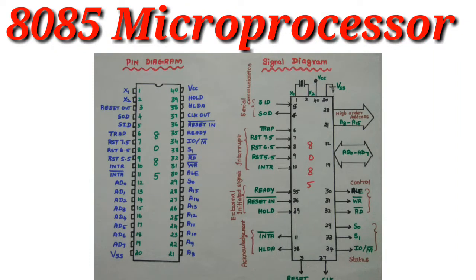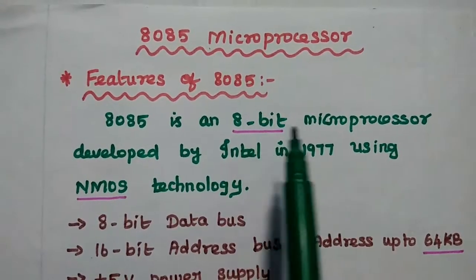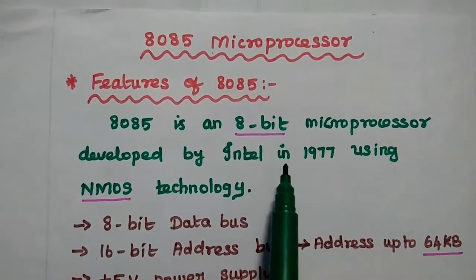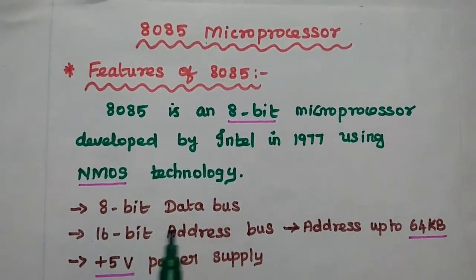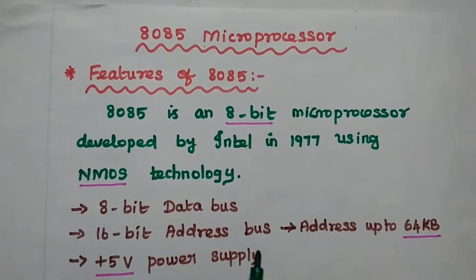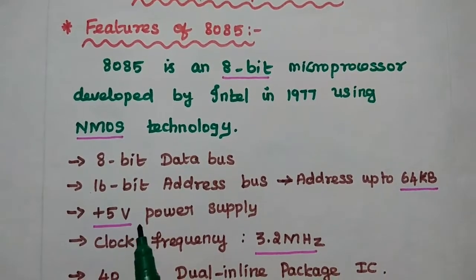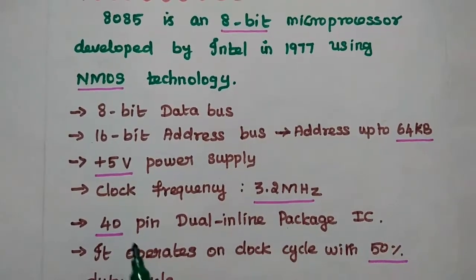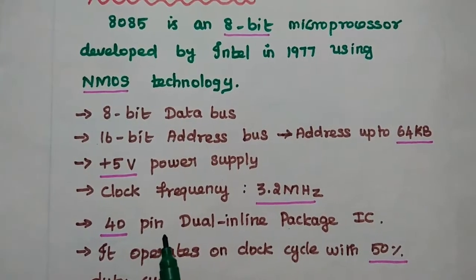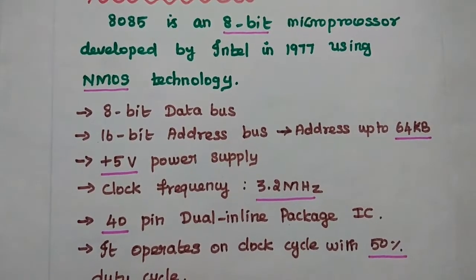Dear students, now we are going to discuss the pin diagram of the 8085 microprocessor in detail. Let's start with the features of 8085. It is an 8-bit microprocessor developed by Intel Corporation in 1977 using NMOS technology. It has an 8-bit data bus and a 16-bit address bus, hence it can address up to 64 kilobyte memory locations. It requires a plus 5V power supply, its clock frequency is 3.2 MHz, and it is available as a 40-pin dual inline package IC operating on a clock cycle with 50% duty cycle.